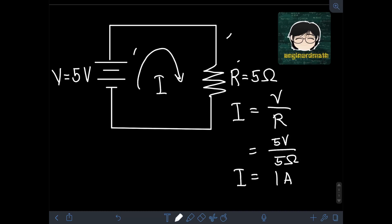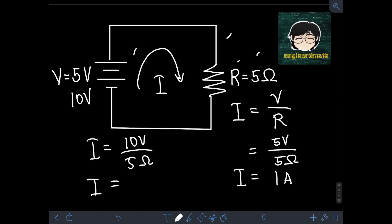What if I change the voltage to, let's say, 10V, and I retain the value of the resistance R as 5Ω? We can have a new value of current. Current is now equal to 10V divided by 5Ω, or I is equal to 10 divided by 5, which is 2A.